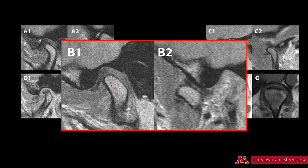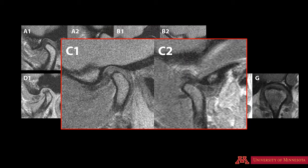In the next case, here is the condyle, articular fossa, and eminence. This is the posterior band of the disc. The central zone is anteriorly located, not in contact with the condylar head, so we'll call this as indeterminate. In the open mouth, the disc reduces back to normal relationship — the condyle, articular eminence, and disc is bowtie shaped.